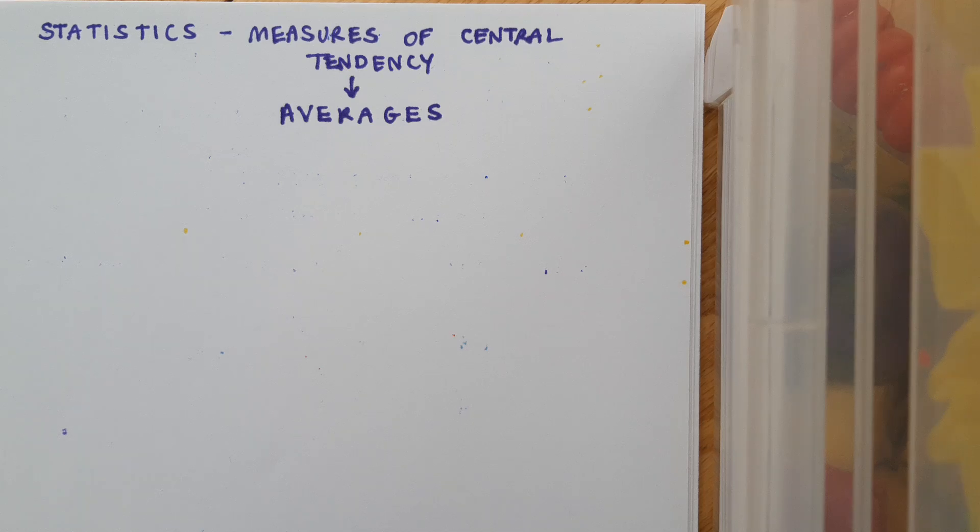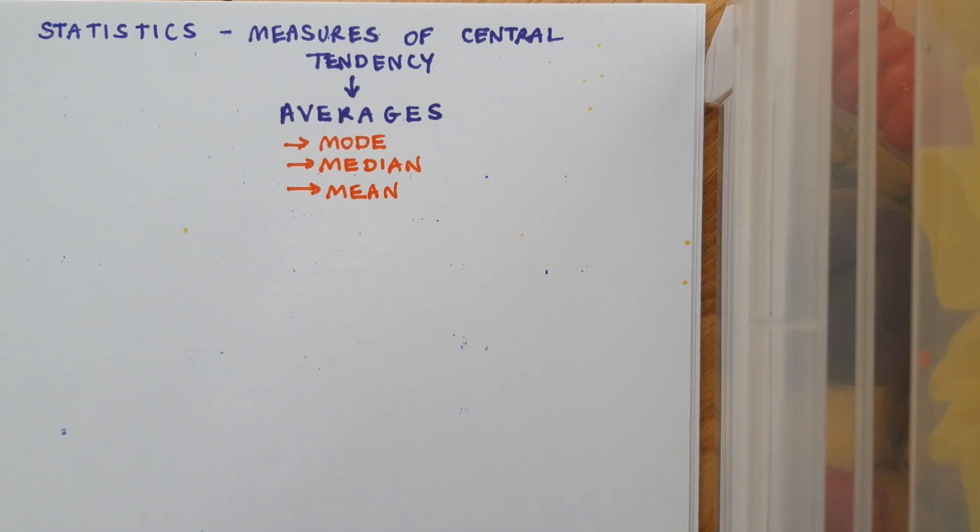This is a video on statistics, measures of central tendency, and together these get called by the name averages. But average actually can mean one of three things: mode, median, or mean. These three things are measures of the middle of your data, but in slightly different ways.